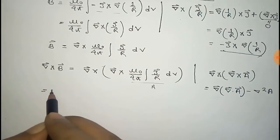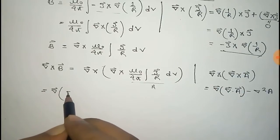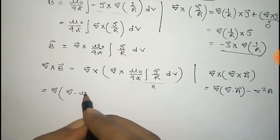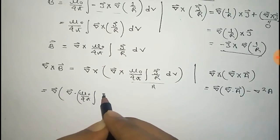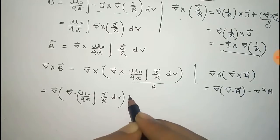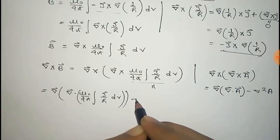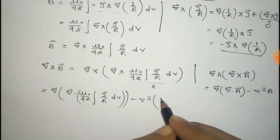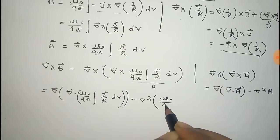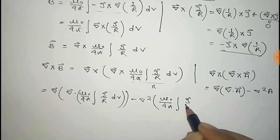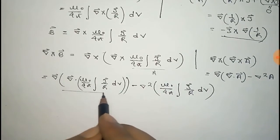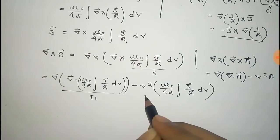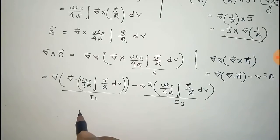So it will be nabla times the divergence of A, that is divergence of μ₀/4π times the integration of J/r dv, minus nabla-squared of A, that is μ₀/4π times the integration of J/r dv. We take the first term as I1 and the second as I2, so this is I1 minus I2.